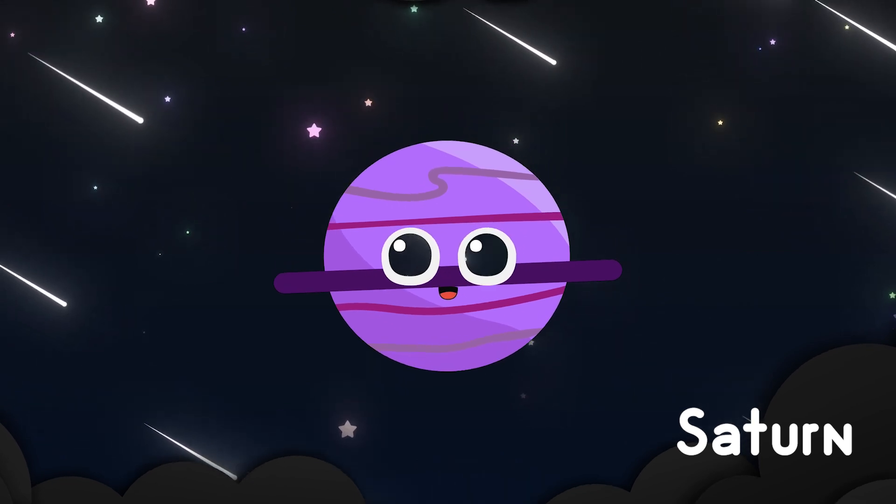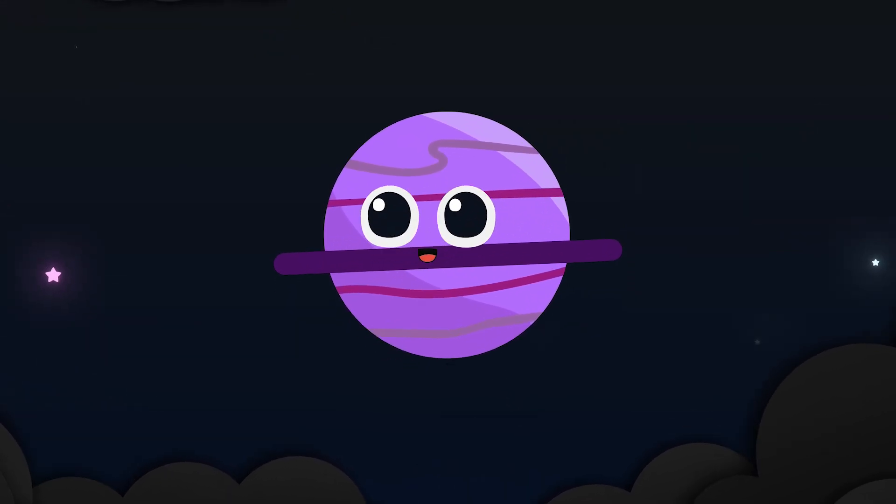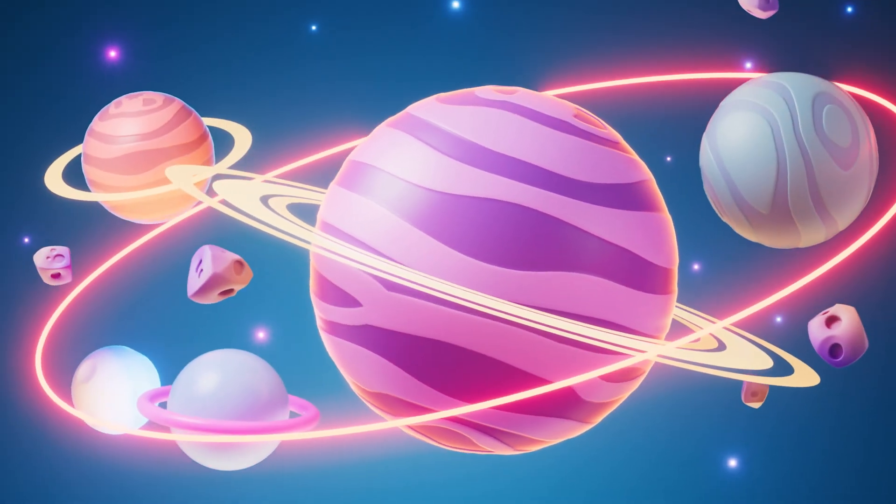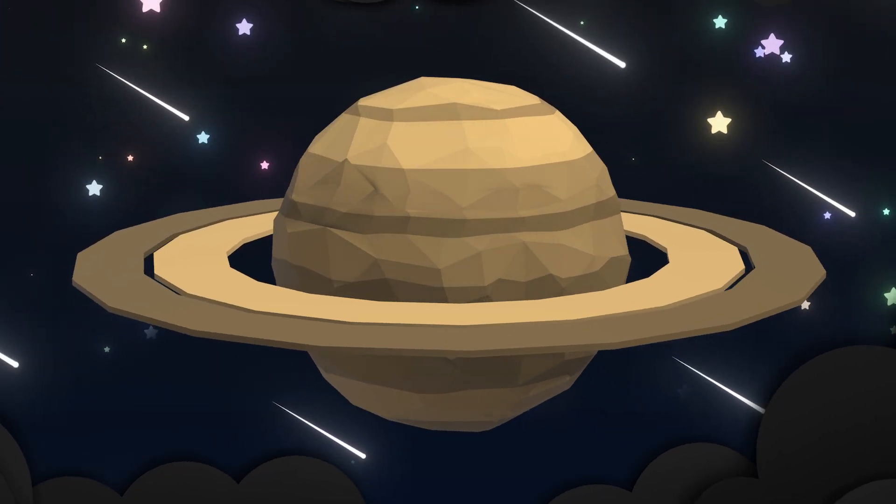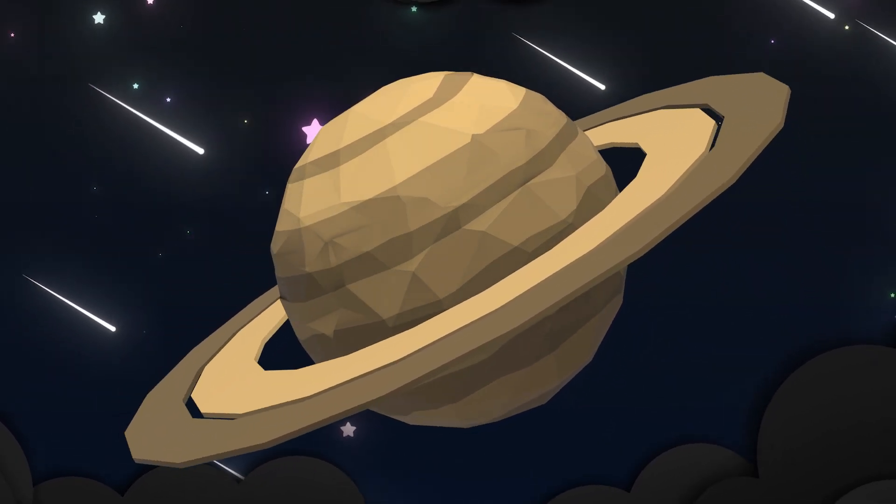Saturn wears rings of icy light, spinning slowly, soft and bright. A golden glowing sky so far, a frozen crown beneath the star.